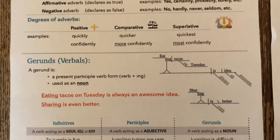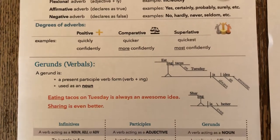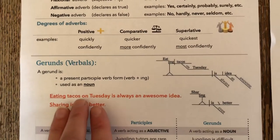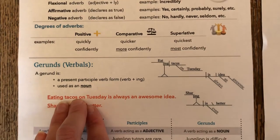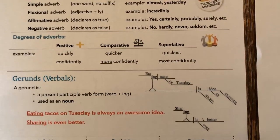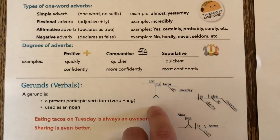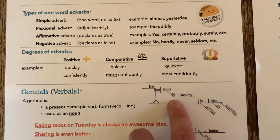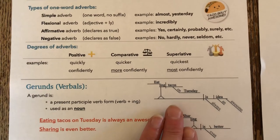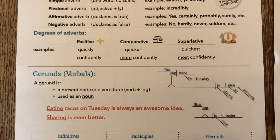A more complicated sentence would be that first one: Eating tacos on Tuesday is always an awesome idea. What is always an awesome idea? Eating tacos on Tuesday. So here we have a phrase that is serving as the subject, and we have some adverbs and adjectives coming off of there. You could see how we would diagram a phrase with a gerund in it — your stilts go under the gerund and then you would diagram that phrase off of it. You are welcome to parse that and work on that at home.